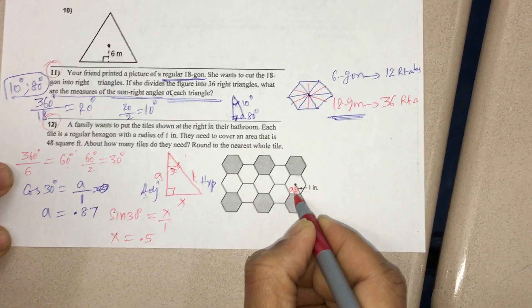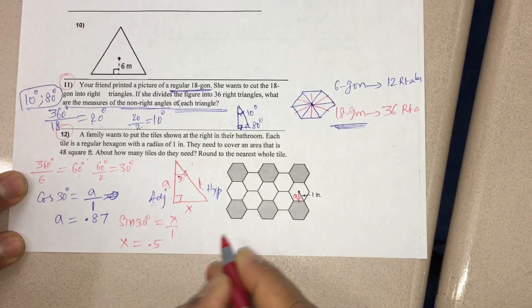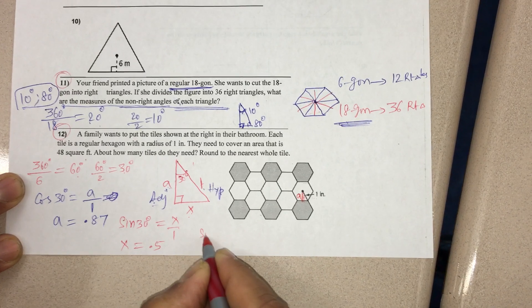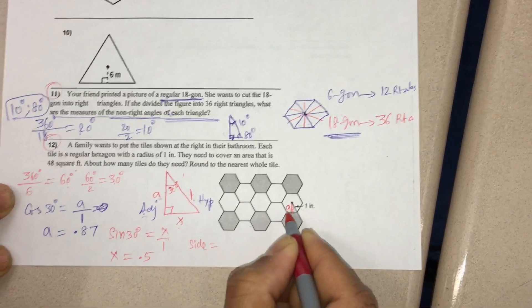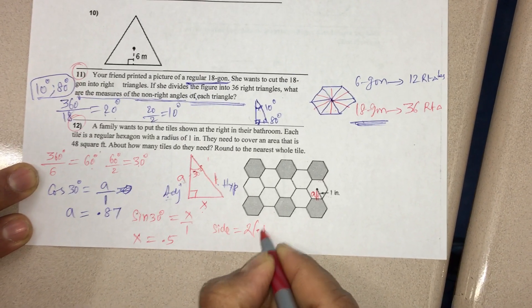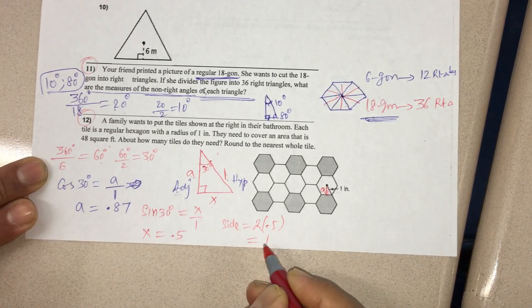If x means this half of the side, and if you want the full side, you get double of that. Therefore, the side of this regular hexagon is double of 0.5, which gives you 1.